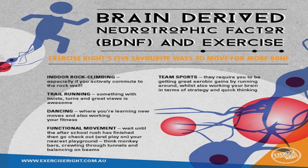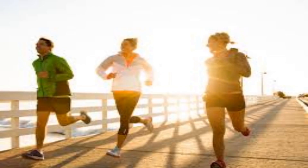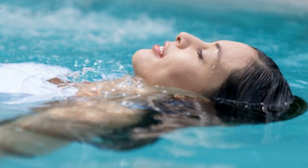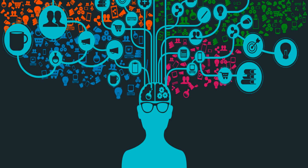Brain-derived neurotrophic factor (BDNF) is a protein that helps in brain cell development. If we have more of this protein, we can learn more. We can improve this protein in our body through exercise such as running, cycling, or swimming. Neuroplasticity is a situation in the brain where neuron cells adapt to new situations or new environments.